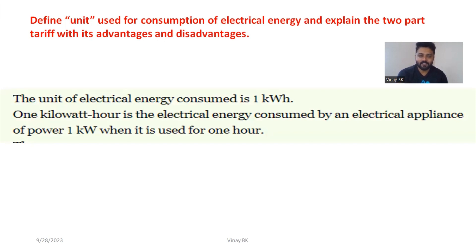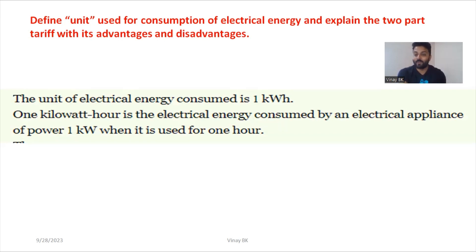In general, the unit is calculated based on how many appliances you are using in your home, multiplied by the time consumed for that appliance, multiplied by the power rating of that appliance. That is: number of electrical appliances into power rating of that appliance into time consumed equals one unit.